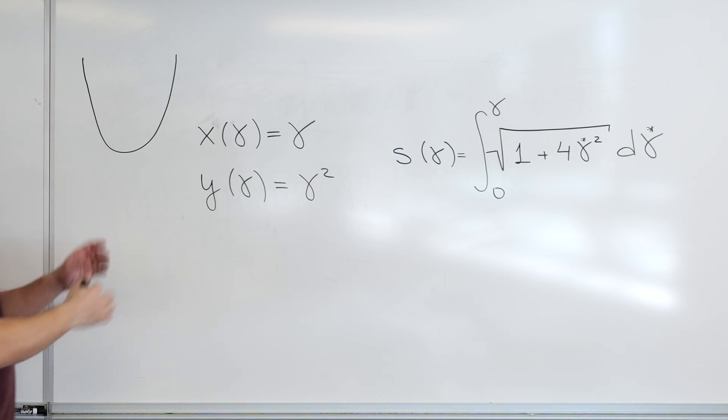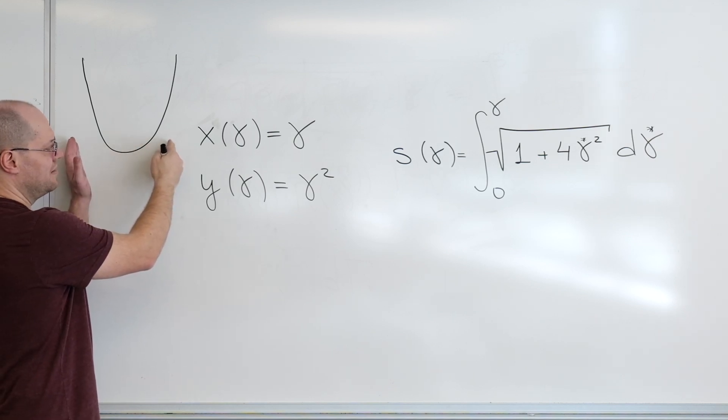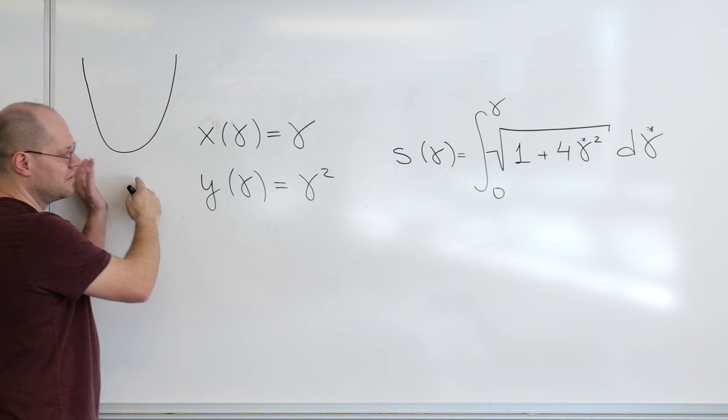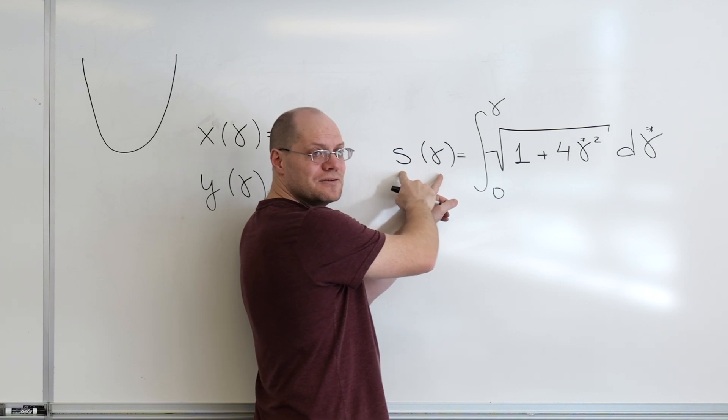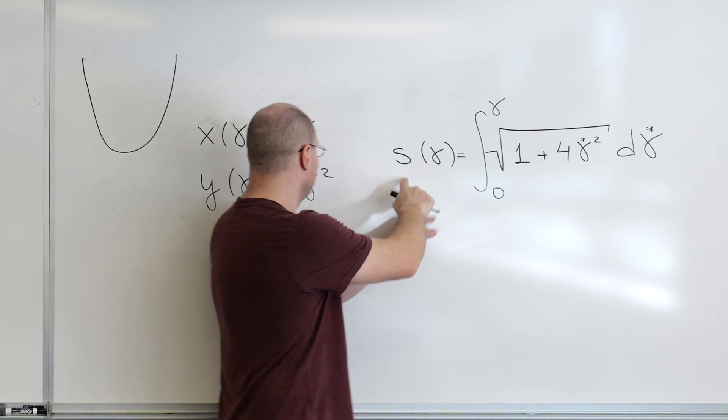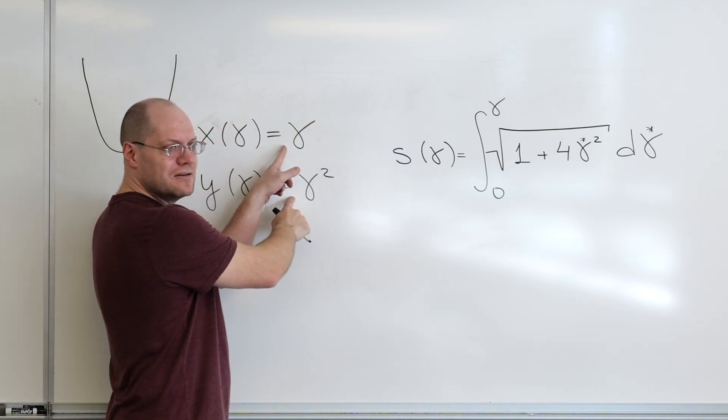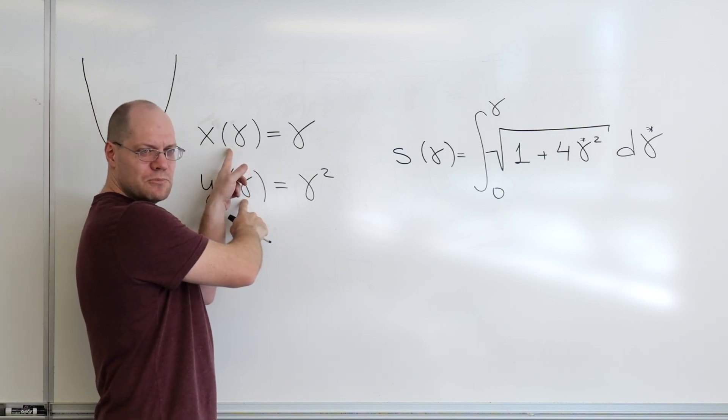So if we wanted to parametrize this parabola by the arc length, we would need to evaluate this expression and then solve for gamma. You guys agree with me? Solve for gamma and substitute it in here. So now you have your expressions in terms of arc length.